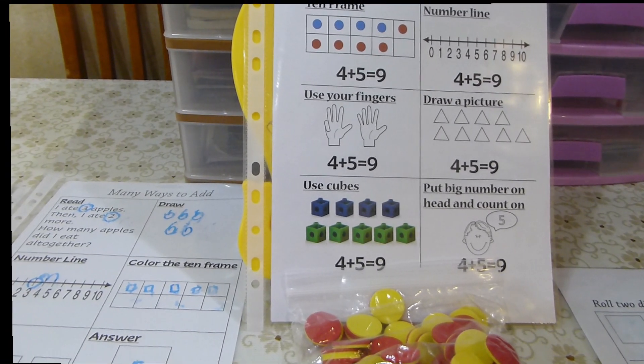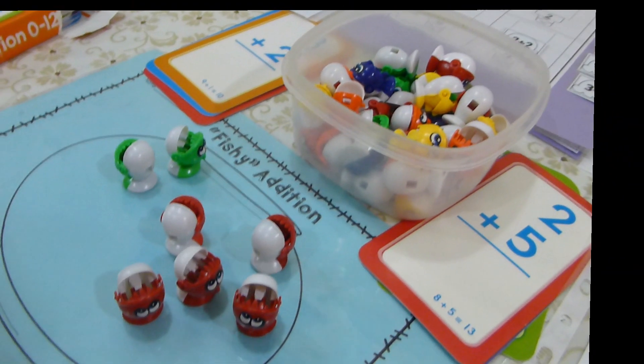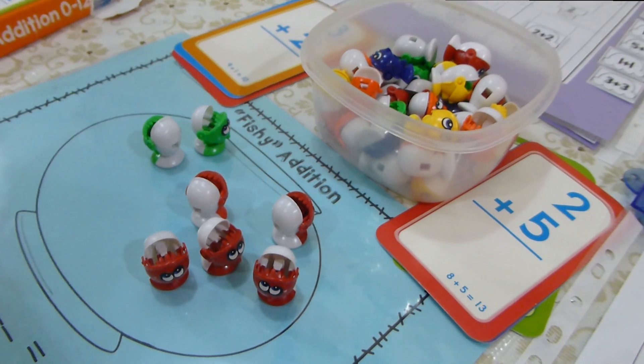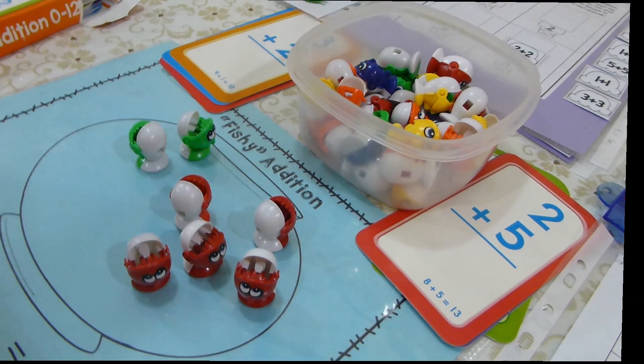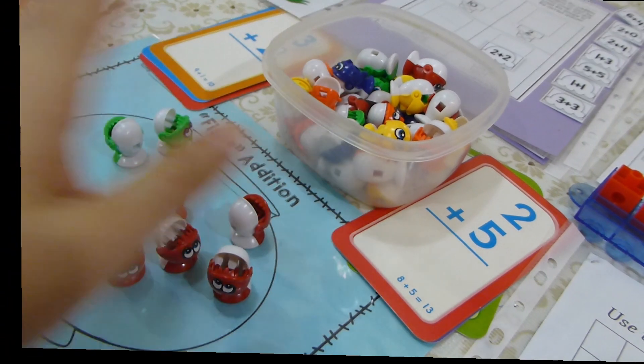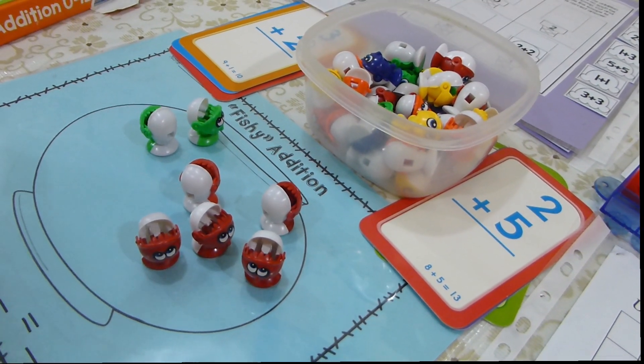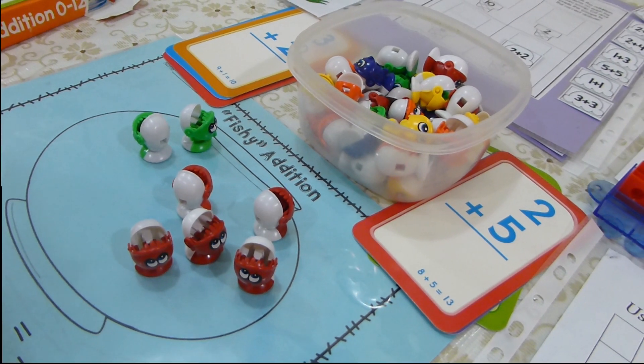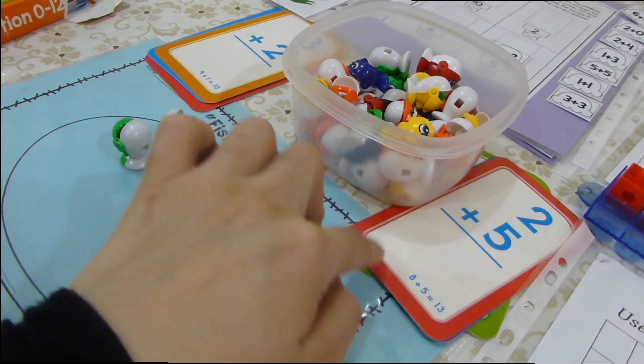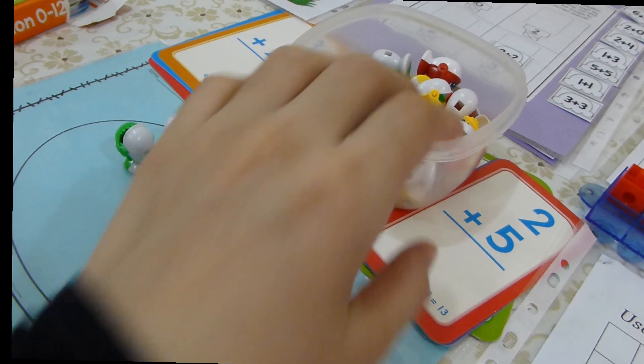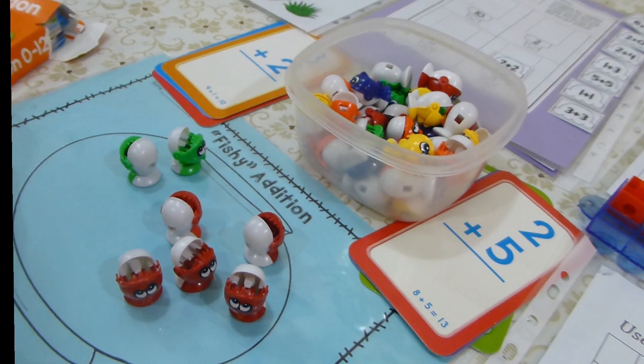Let's get started with the first game that I prepared for today. I found this printable on the internet, but because we have these fish, I like to make it like a game. The child can play this independently or with a partner. Here we have two groups of addition flashcards, and these are the kind of flashcards I use here at home.